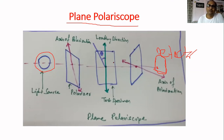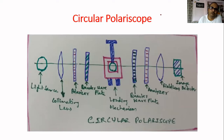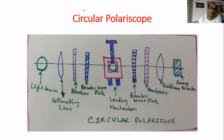The isochromatic pattern is of much use because it gives the magnitude of shear stress, whereas isoclinics gives the direction of shear stress. In the circular polariscope, we have a light source, and then a collimating lens which expands the light source so that it can cover the complete specimen. Then we have a polarizer, producing polarized light.